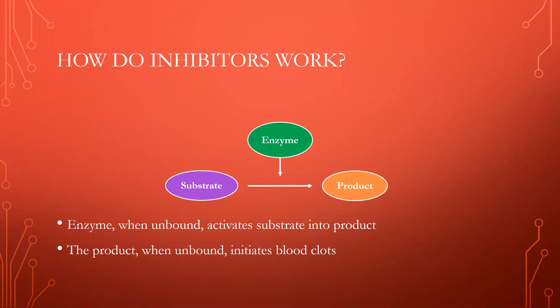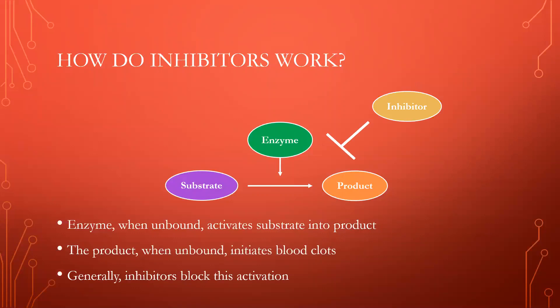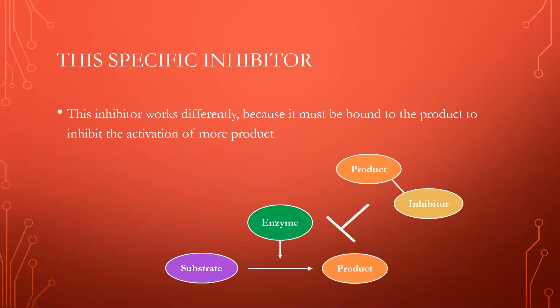Enzyme, when unbound, can activate substrate into product. This product is what goes on to initiate blood clots. Generally, to prevent over-clotting, inhibitors will block the activation of this product.